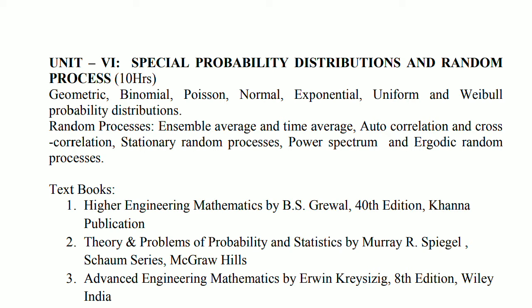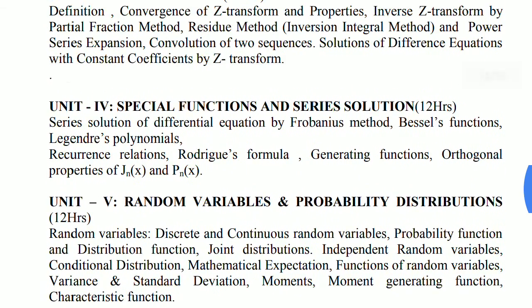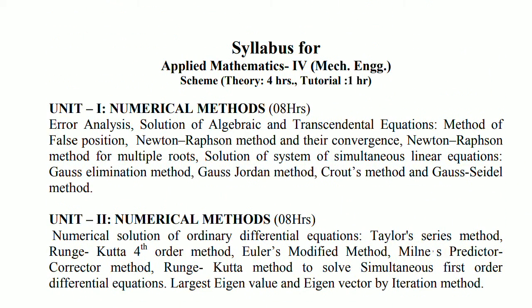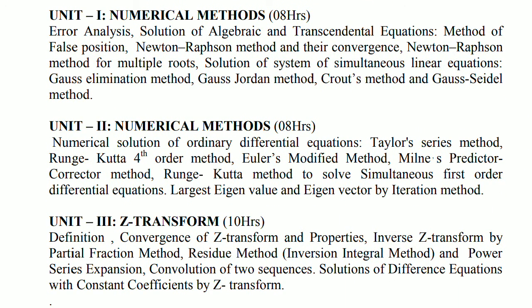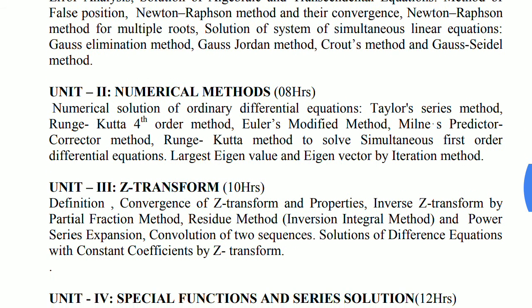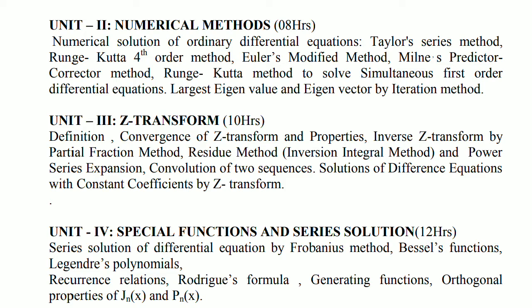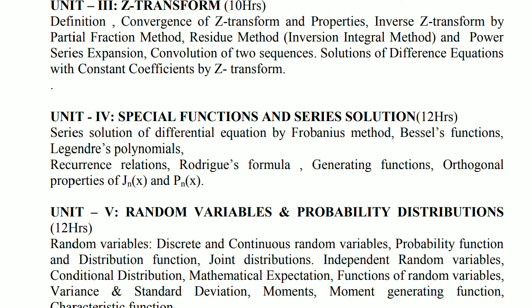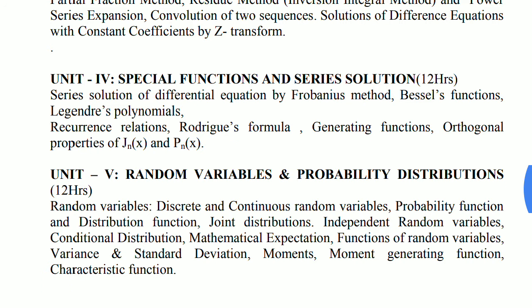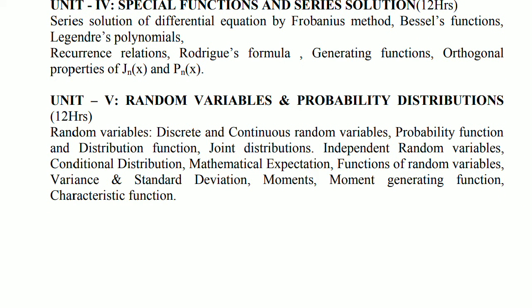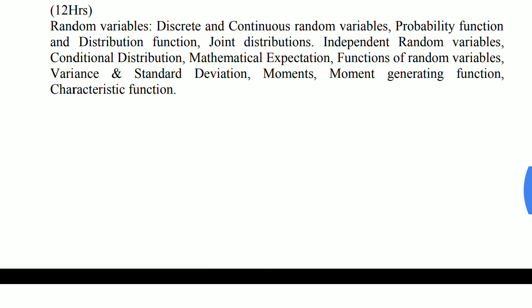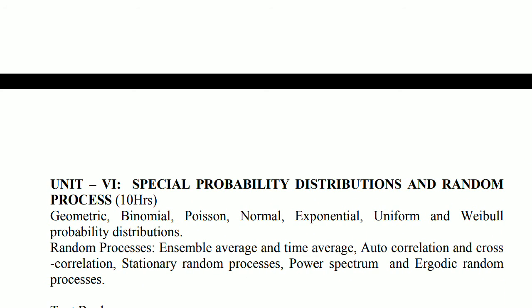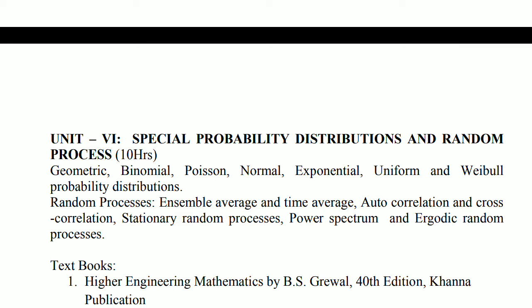So this is all about the easy topics. If you count the marks, it is very simple: we are getting more than 45 marks. That is 12 marks from unit 1, plus 7 marks from unit 2 — that is 19. Unit 3, Z-transform, 6 marks — that is 25. Special Functions, 6 marks — that is 31. Random Variables and Probability Distributions, unit 5, 7 marks — that is 38. And then from unit 6, plus 7 more — total 45 marks.